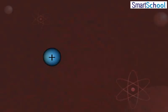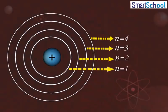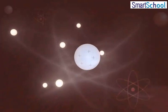These are numbered as 1, 2, 3, 4, etc., or K, L, M, N, and so on as we move outwards from the nucleus.